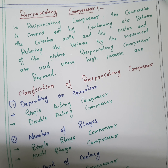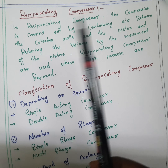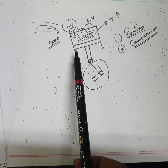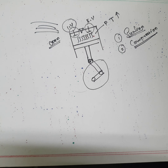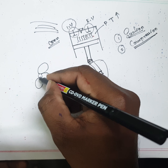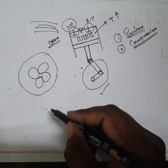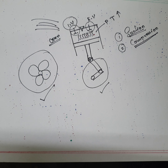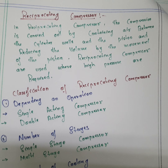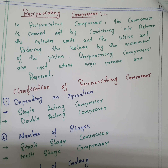There are two main types: rotary compressors and reciprocating compressors. In a reciprocating compressor, the piston moves upward and downward in to-and-fro motion. In a rotary compressor, rotation is used instead. In this topic, we focus only on the reciprocating compressor, where air is compressed between the cylinder walls and the piston by reducing the volume through piston movement.